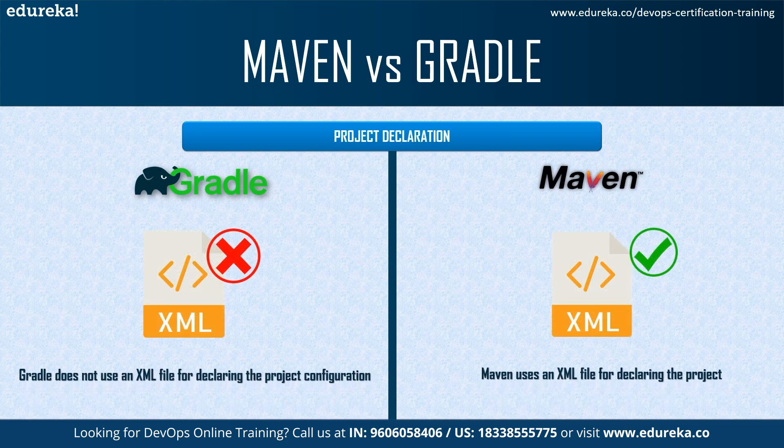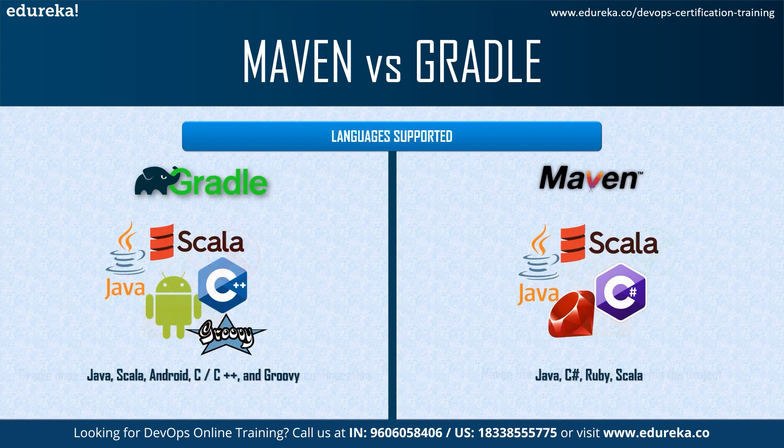The next thing is project declaration. Gradle does not use any XML file for declaring project configuration, while Maven uses an XML file for declaring the project, its dependencies, build order, and required plugins. In terms of language support, Gradle supports Java, Android, Groovy, C++, and Scala, while Maven supports C#, Scala, Ruby, and Java. Maven supports more server-side languages, while Gradle supports both server-side and client-side, including scripting languages like JavaScript.